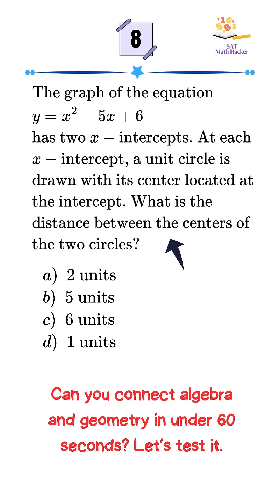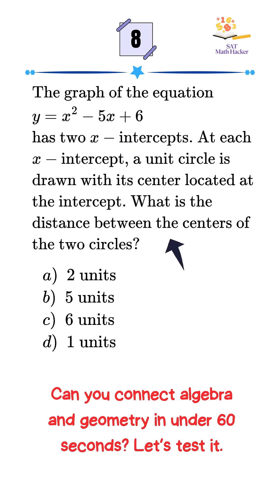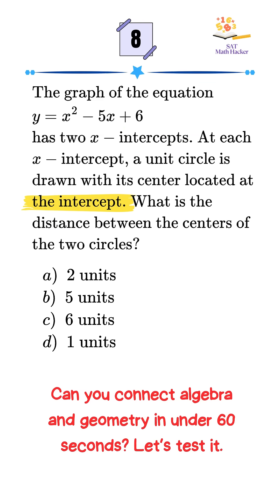We are given the quadratic equation y equals x squared minus 5x plus 6. It has two x-intercepts. We are asked to find the distance between the centers of two circles which are centered at those x-intercepts.